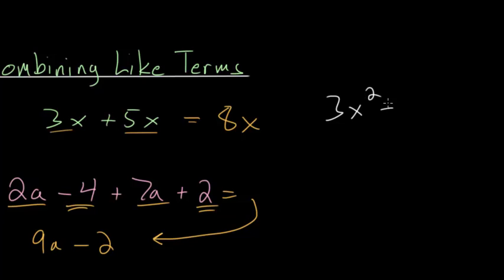So let's say we have 3x squared plus 7x minus 2. And in this case the x squared, the x, and the constant these are all very distinct different things. Again because we don't know what x is equal to.